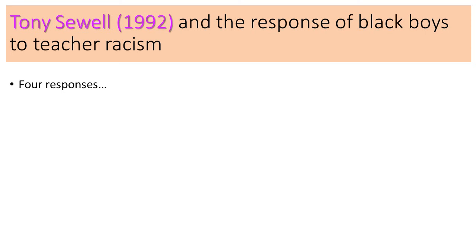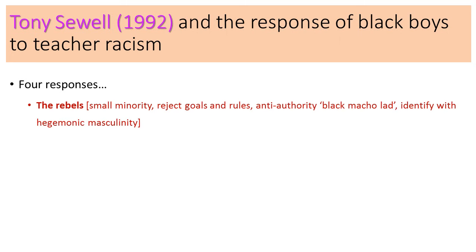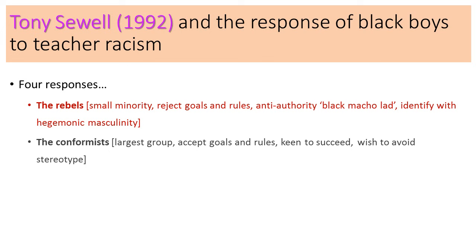Tony Sewell did a study looking at black boys in response to teacher racism in the early 1990s. He found four main responses. Firstly, the rebels - a very small minority who rejected the goals of education, rejected school rules, were anti-authority, engaged in the stereotype of being a black macho lad, and identified with hegemonic masculinity - an overtly heterosexual, sexualized form of behavior with competitive relationships with other boys.